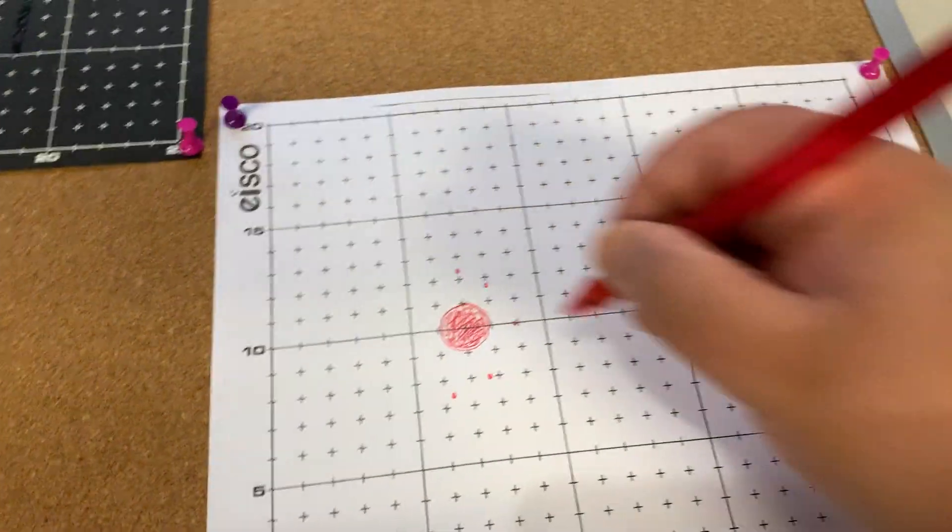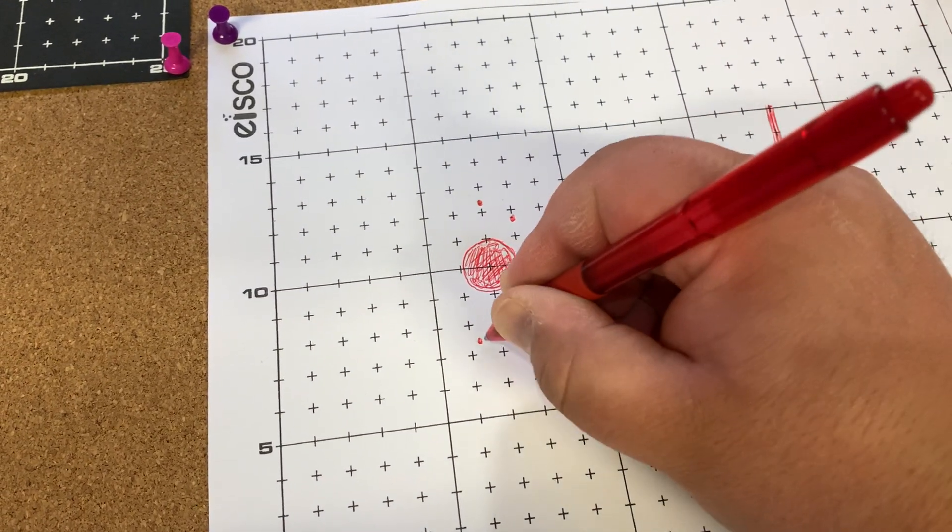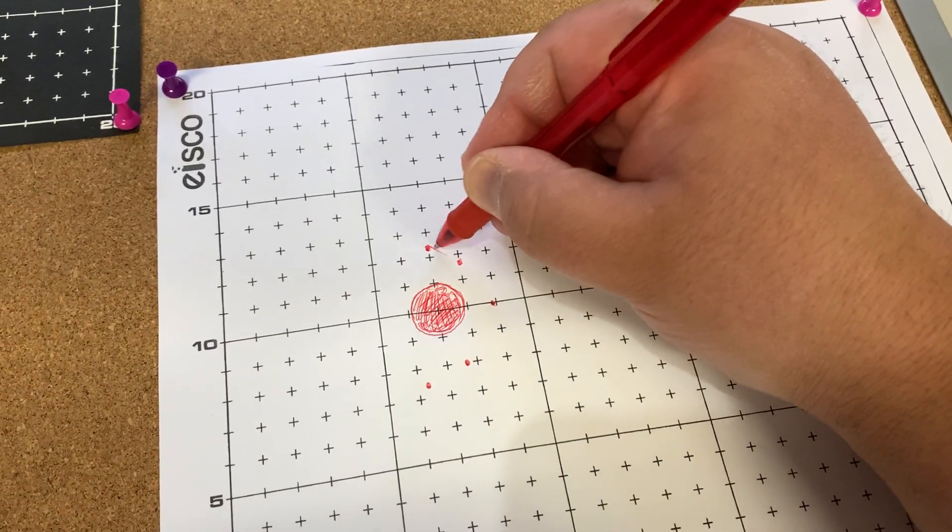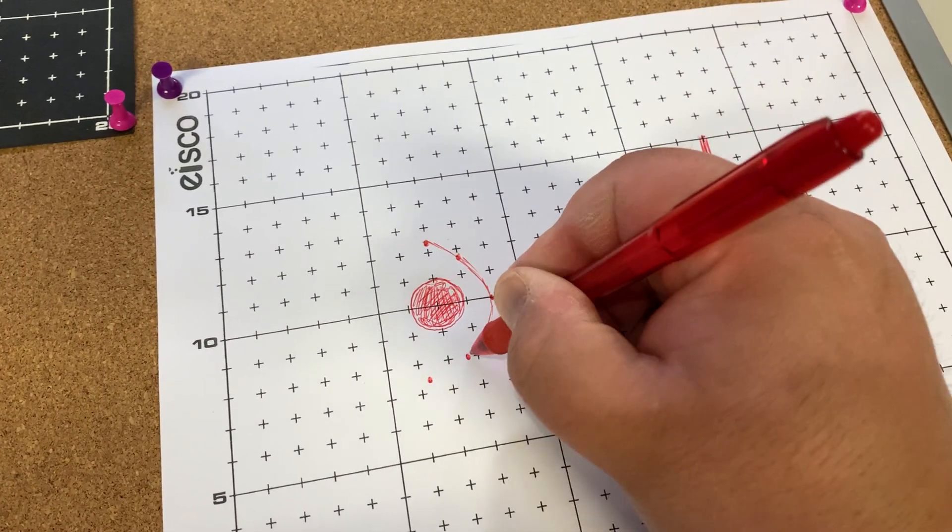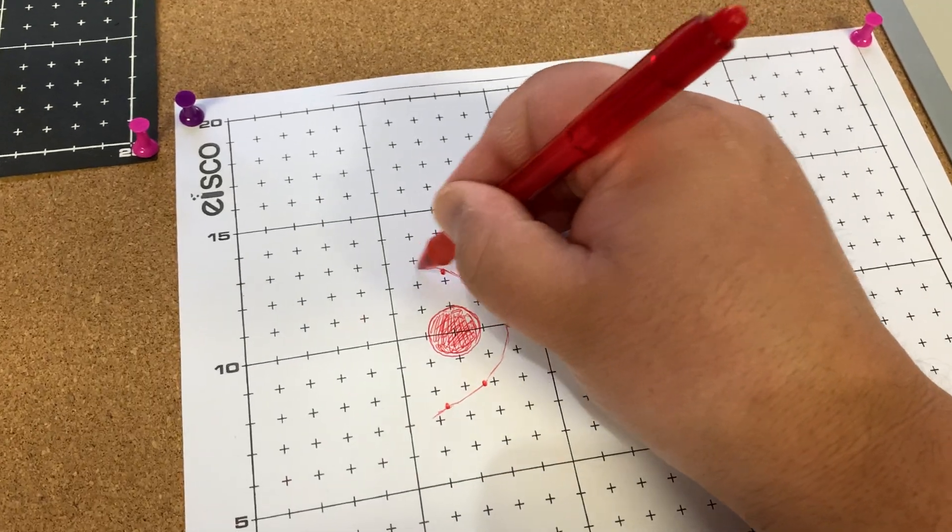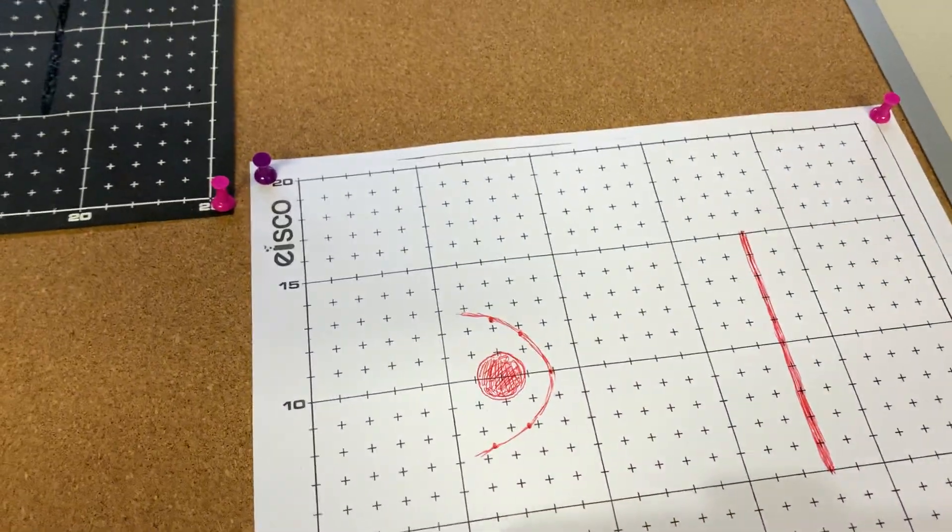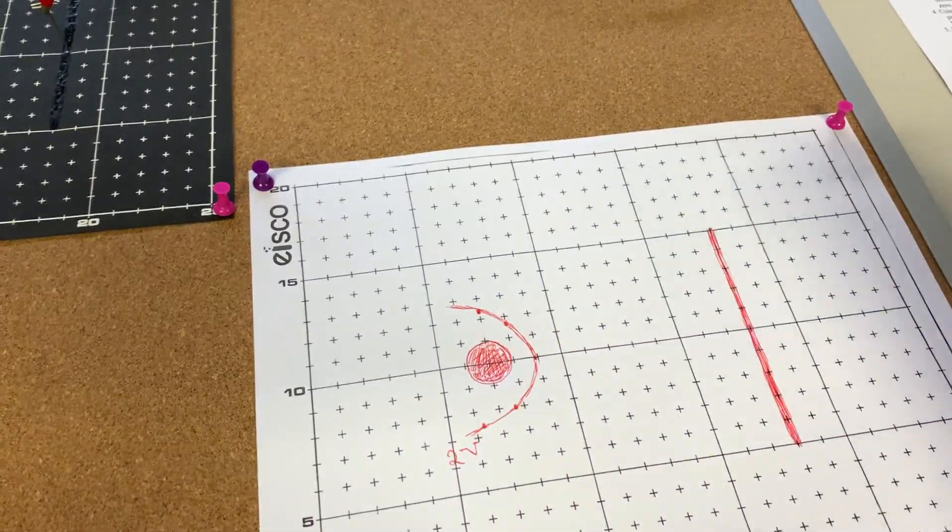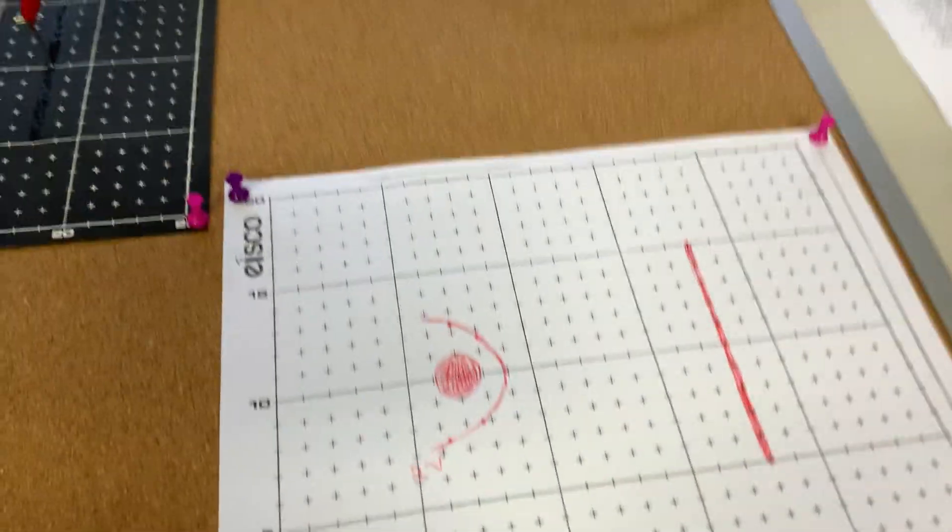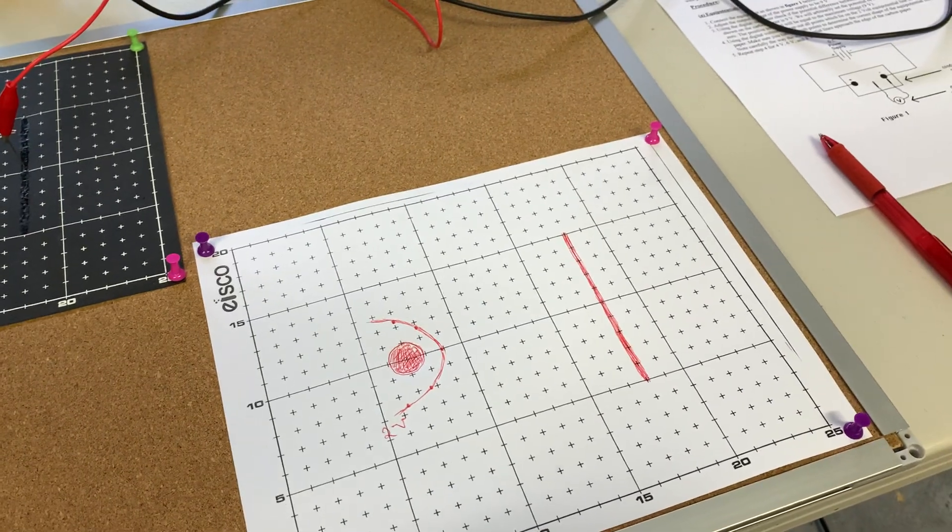Those are the points, and we connect them as usual. And that's for two volts. This is the equipotential for two volts value.